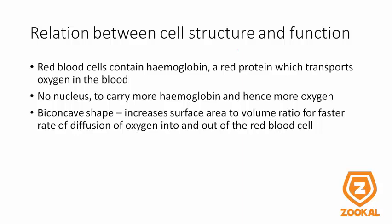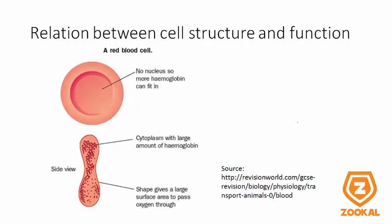Another example is red blood cells, which contain hemoglobin. Hemoglobin is a red protein which transports oxygen in the blood. There is no nucleus present in the red blood cell, hence it can carry more hemoglobin and more oxygen, which is fitting for its role of oxygen transport. The biconcave shape of the red blood cell also increases the surface area to volume ratio for a faster rate of diffusion of oxygen into and out of the cell. As you can see, there is no nucleus, so more hemoglobin can fit into it and more oxygen can be transported. The side view of the red blood cell shows its biconcave shape, with large amounts of hemoglobin proteins in the cytoplasm. The shape gives it a large surface area to volume ratio for oxygen to diffuse in and out of it.